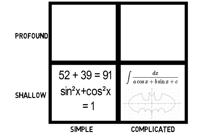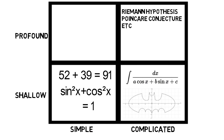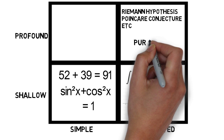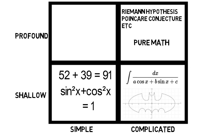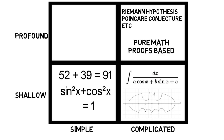Profound and complicated math includes things that most people in high school and even college will never have heard of, like the Riemann hypothesis, the Poincaré conjecture, and more abstract concepts. This is what pure mathematicians learn — if you major in pure math in college, this is some of the stuff you can expect, and it's heavily proof-based rather than just following steps.